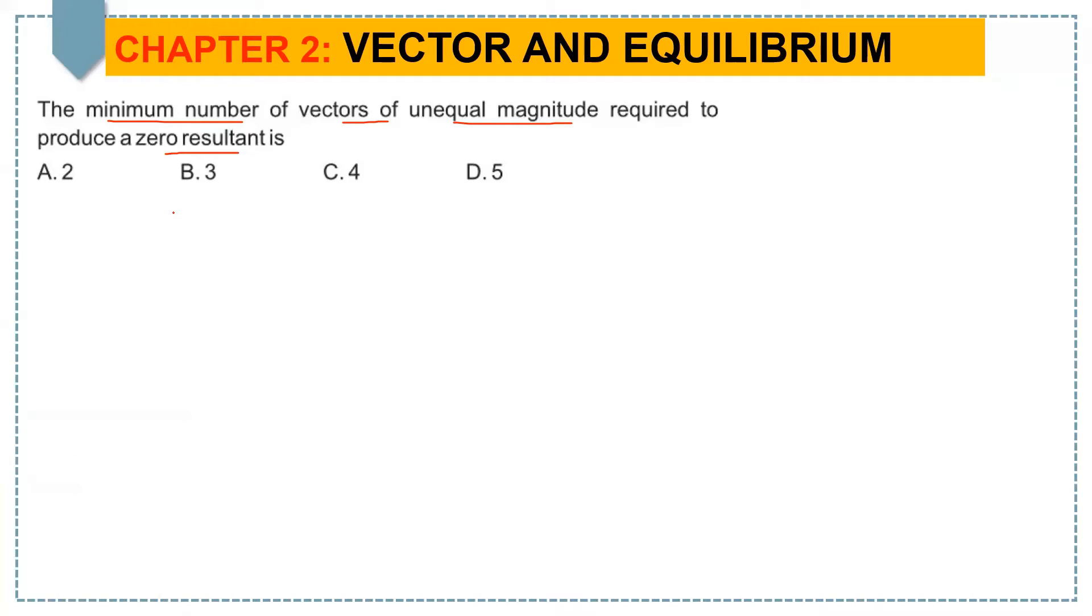Hello students, the question is: the minimum number of vectors of unequal magnitude required to produce a zero resultant is A. 2, B. 3, C. 4, or D. 5.